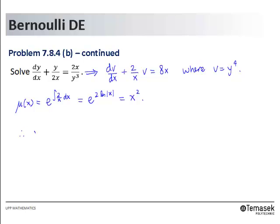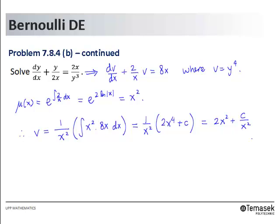So, the solution for v is v equals 1 over the integrating factor times the integral of μ(x) times 8x dx. Doing the integral inside the parenthesis, we have 2x to the power 4 plus c. And this implies 2x squared plus c over x squared.